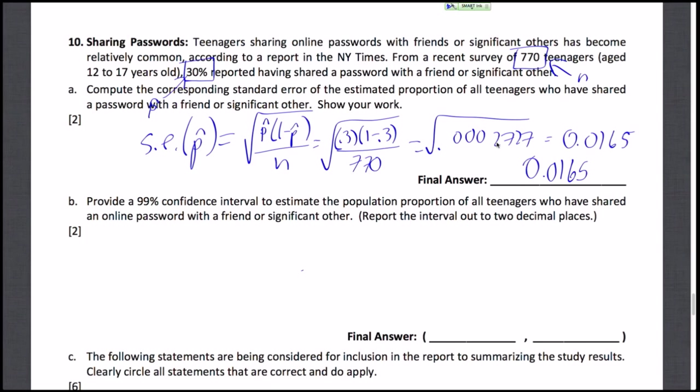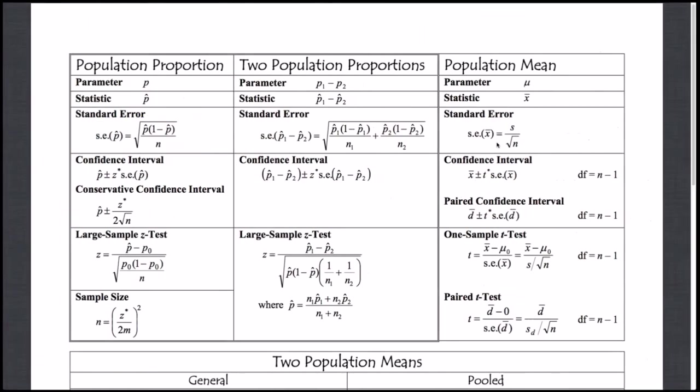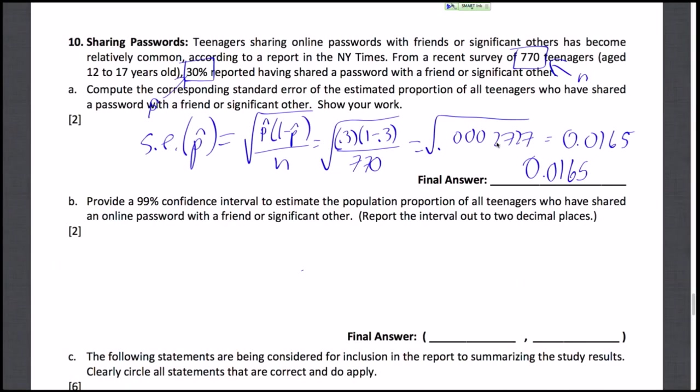Now in part B, we're going to use this to provide a 99% confidence interval to estimate the population proportion of all teenagers who have shared an online password with a friend or significant other. We need to report this interval out to two decimal places. First we need the confidence interval equation. We already know p-hat and the standard error of p-hat, so the only thing we need to figure out now is our z-star.